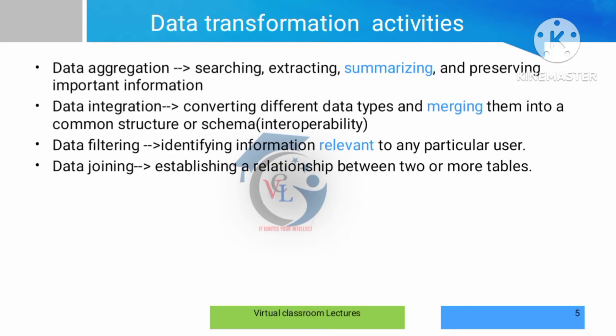We collect all the data, and if any information is correct, there is aggregated data or a particular data search. Then there is data integration — merging and grouping two kinds of data that exist in different formats. Then data filtering handles large volumes of data; for example, in a student scholarship form with many categories, we filter for a particular category of people. Data joining is similar to integration.